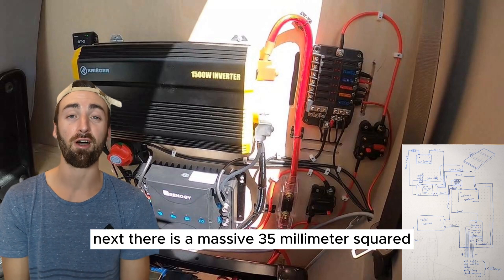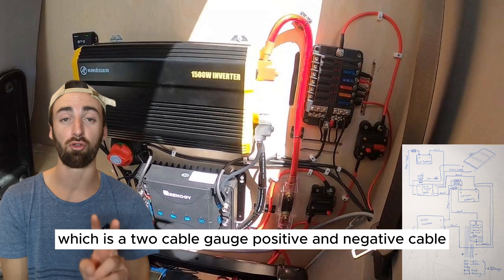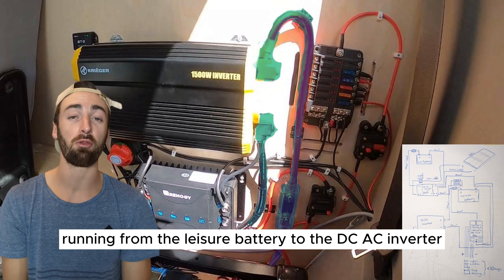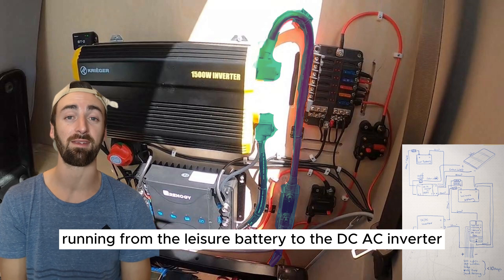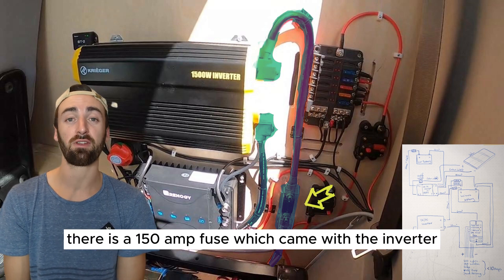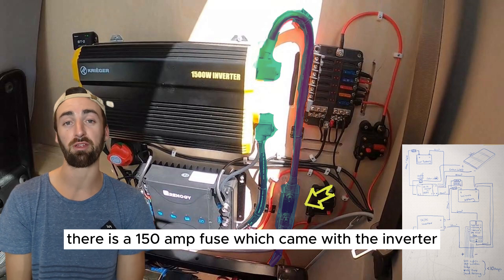Next there is a massive 35 millimeter squared which is a 2 cable gauge positive and negative cable running from the leisure battery to the DC AC inverter. On the positive for that connection there is a 150 amp fuse which came with the inverter.